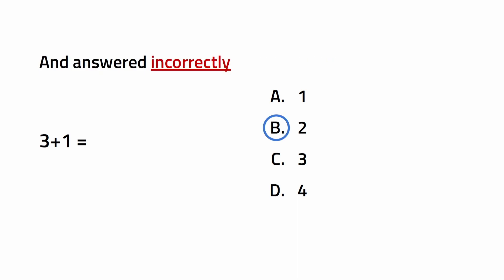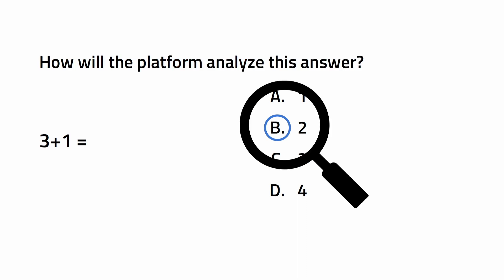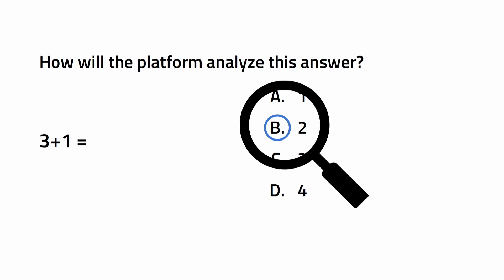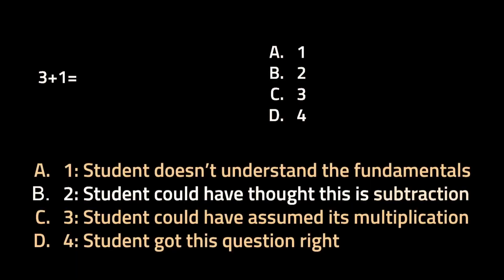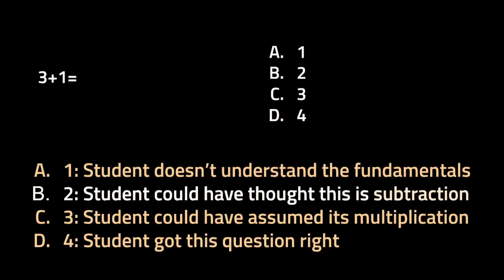Let's say this student answered incorrectly and chose two. How will the platform analyze this specific answer? The platform could think that this student has probably thought that the addition function is a subtraction function, and hence choosing three plus one equals two.